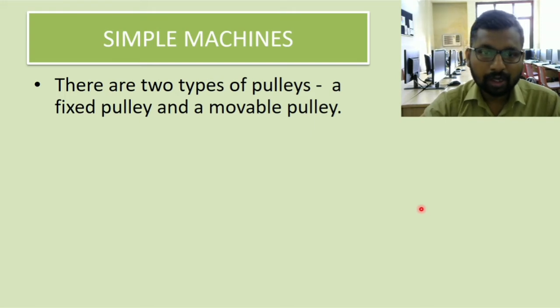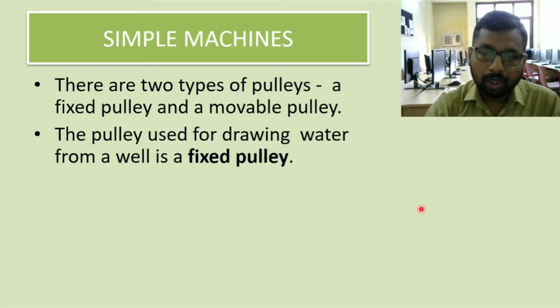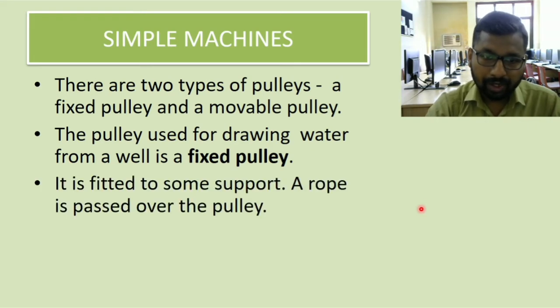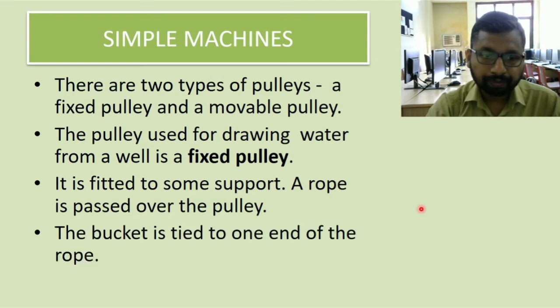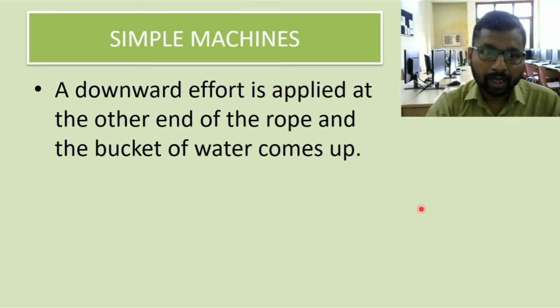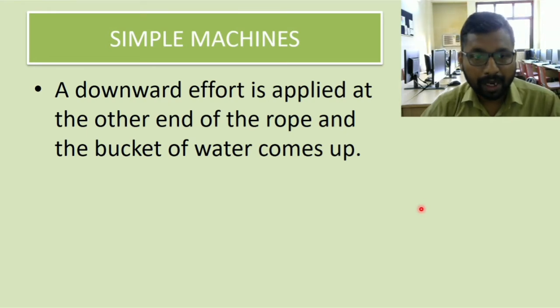The next point is there are two types of pulleys: a fixed pulley and a movable pulley. The pulley used for drawing water from a well is a fixed pulley. It is fitted to some support. A rope is passed over the pulley, a bucket is tied to one end of the rope, and a downward effort is applied at the other end of the rope, and the bucket of water comes up.